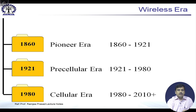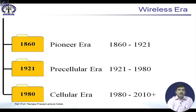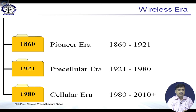The cellular era started with the concept of cellular systems, which was initially developed in Bell Labs. Beyond these three eras is a fourth era of cellless architectures, which is still evolving and it is not yet known what kind of architecture is going to come up. Probably in future courses you might come to know about modern cellular systems or the modern radio access network.